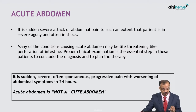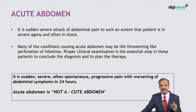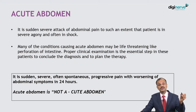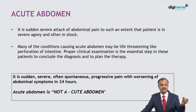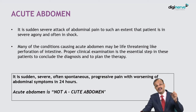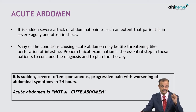It is sudden, severe, often spontaneous, progressive pain with worsening abdominal symptoms. Pain is the main chief complaint. Afterwards the patient will have vomiting, nausea, hypotension, and features of shock. These develop later — so pain first, then other symptoms. Pain is the main main symptom in acute abdomen, usually within 24 hours.